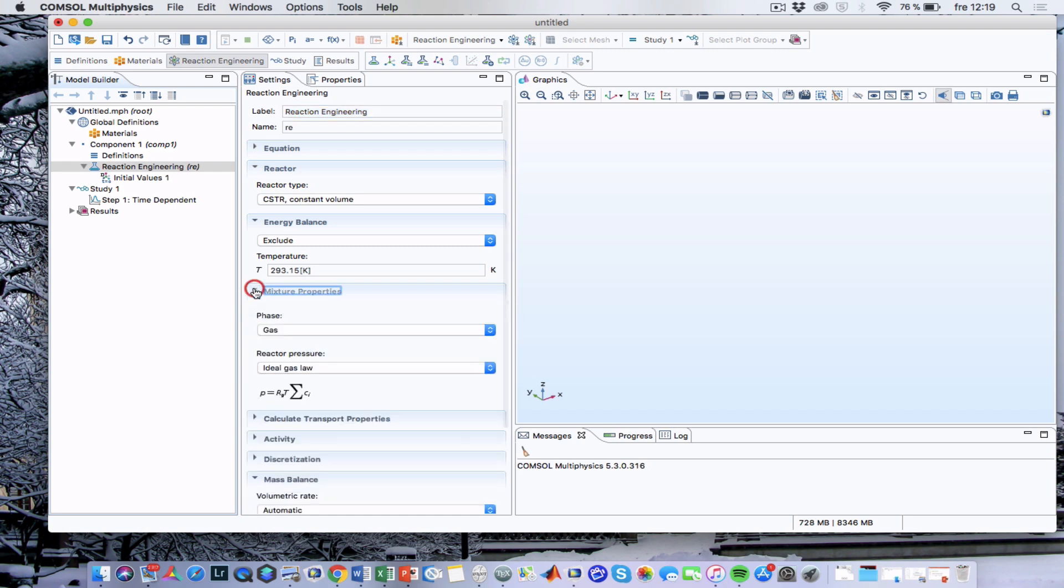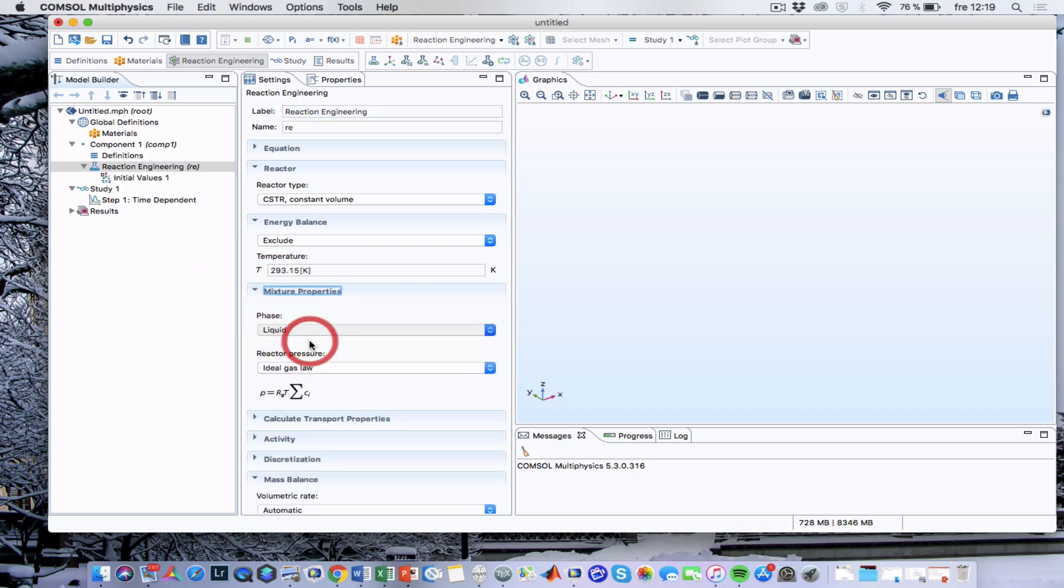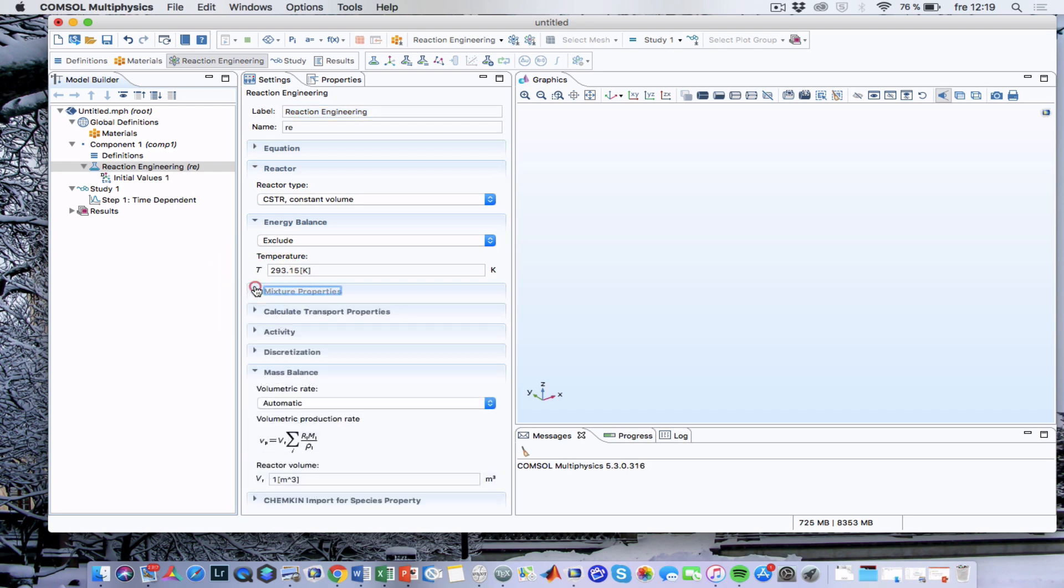I can set the mixture properties to liquid, which is not necessary, but I will do that anyway. Then I will say that the reactor volume is 30.